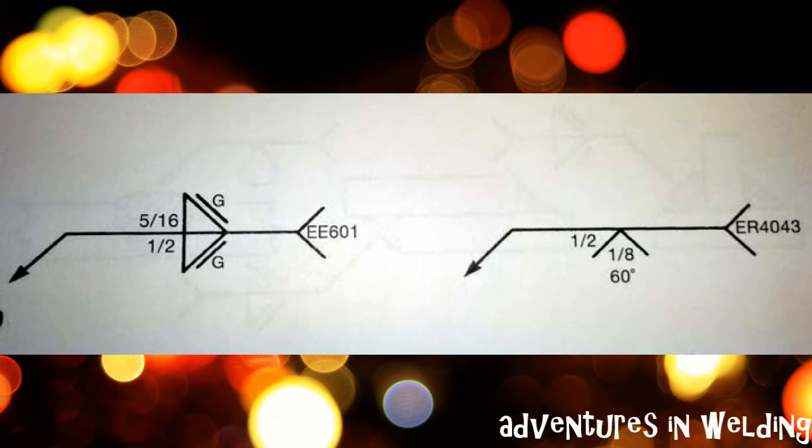Okay, there's our answers. You can see on the left you have your 5/16 inch leg on top, your 1/2 inch leg on the arrow side. Both sides have a flat face, you expect to grind it, and the note is at the end of the arrow telling you to use procedure EE601. The one on the right, we have the arrow side groove weld with a depth of preparation of 1/2 inch, 1/8 inch root opening, groove angle of 60 degrees, and you are to use the ER4043 filler. That is again in the note section at the end of the arrow.